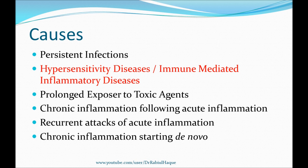In allergy, we get an excessive and inappropriate immune response against substances that are normally harmless. For example, in bronchial asthma, the patient may have excessive and inappropriate activation of the immune system in response to pollen or some other allergen. So in allergic disease we can also have chronic inflammation.